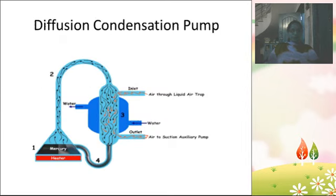Let us see how the diffusion condensation pump works. A mercury diffusion pump consists of a flask containing mercury. This flask is connected to another tube. The end of the tube is connected to another tube in the form of a narrow jet that opens inside the outer tube.